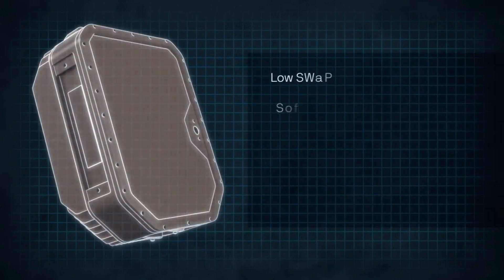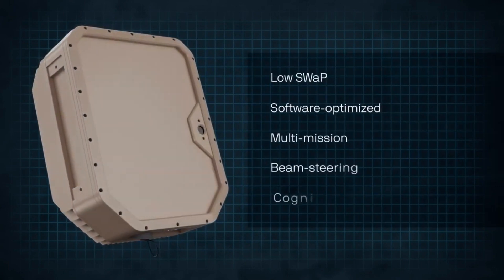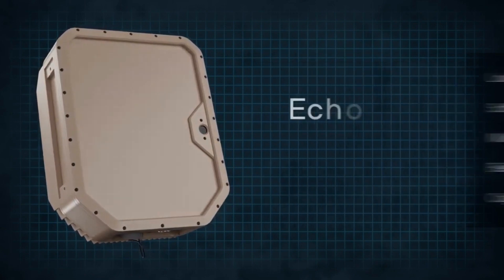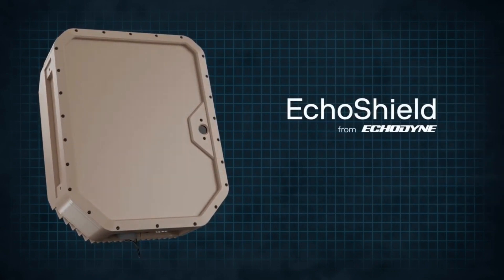Echoshield is a low-swap, software-optimized, multi-mission, beam-steering cognitive radar designed to adapt to user need and location.